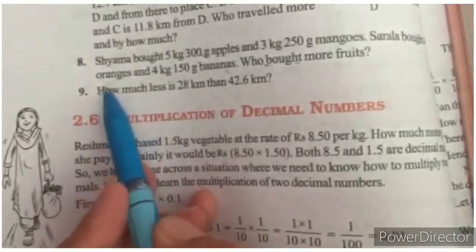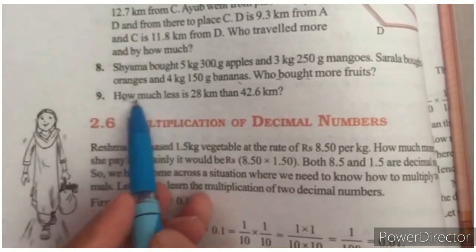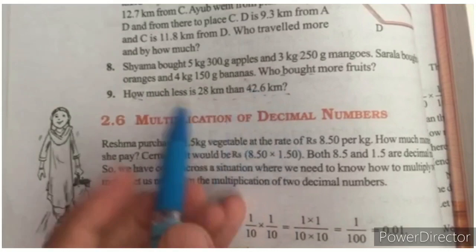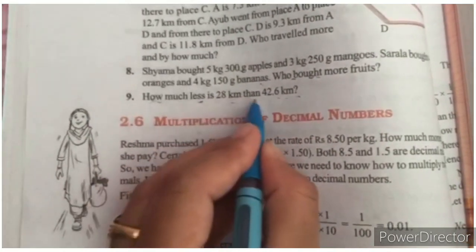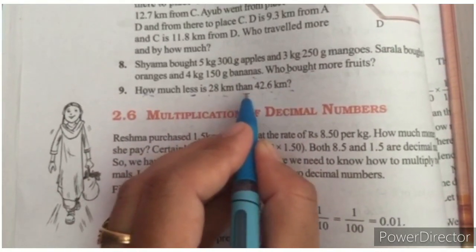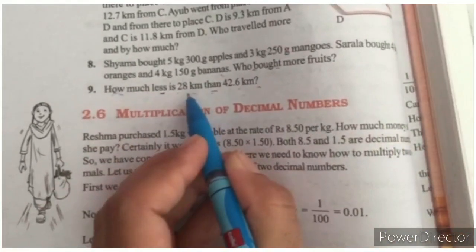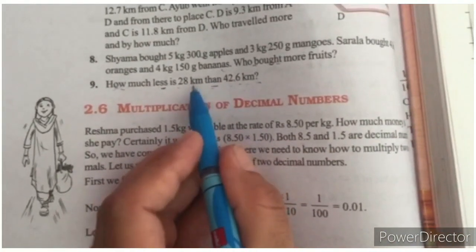Question number 9. How much less is 28 km from 42.6 km? That means when there is less than a question, we always have to think that we have to do subtraction.